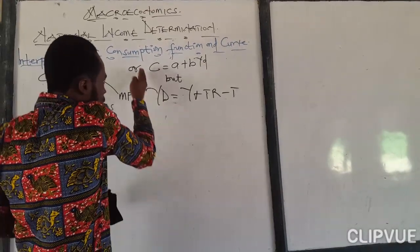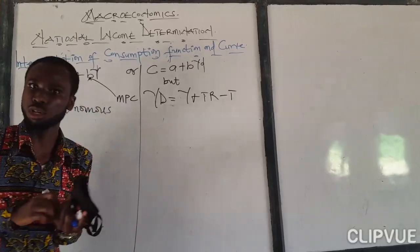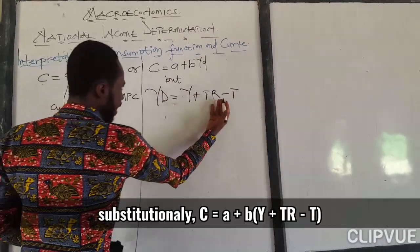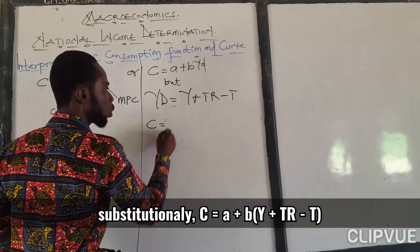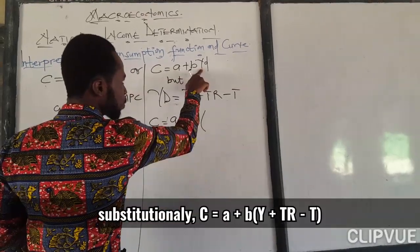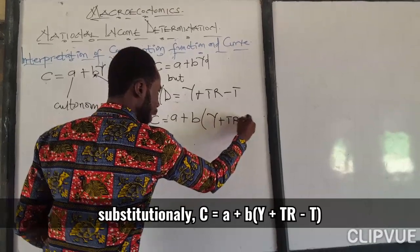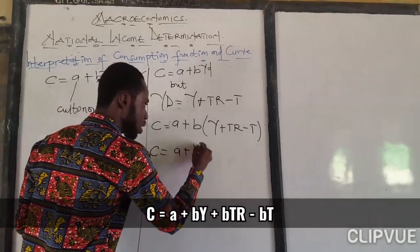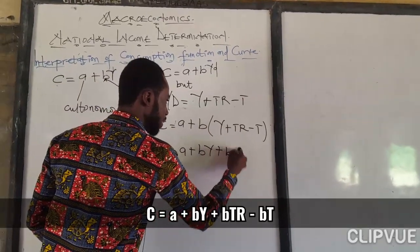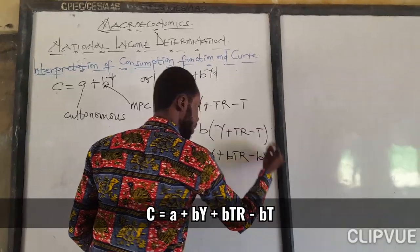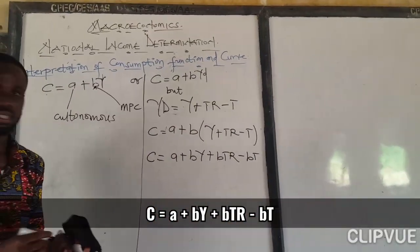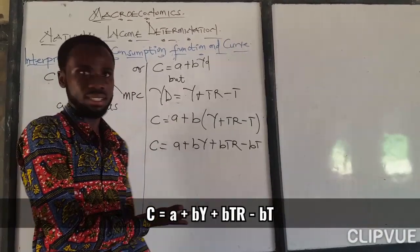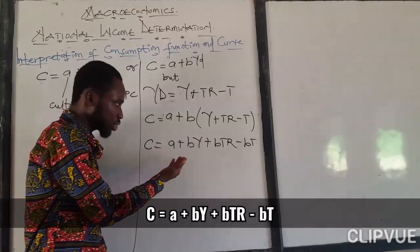So if you are using this formula — of which basically most exam questions will give you this form — then substituting, you are going to get C equal to A plus B times (Y plus TR minus T). If you expand it, you are going to get C equal to A plus BY plus BTR minus BT. You can do further configurations, but this is how it is going to be.